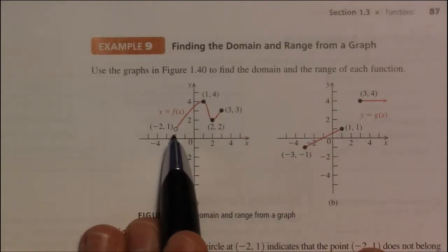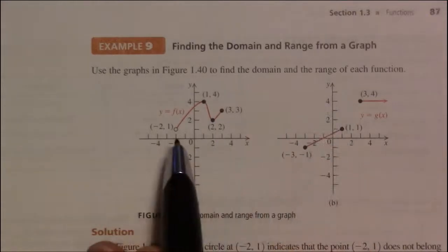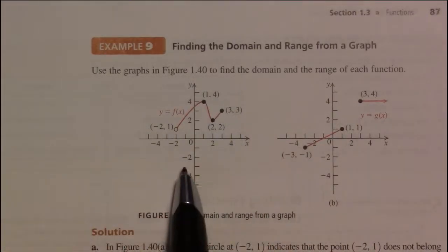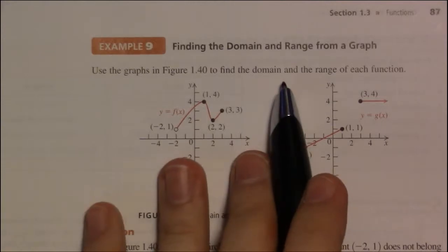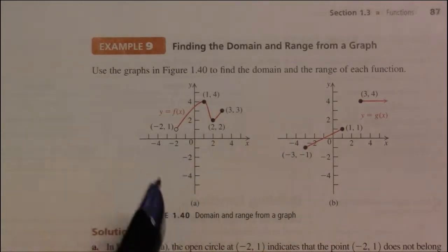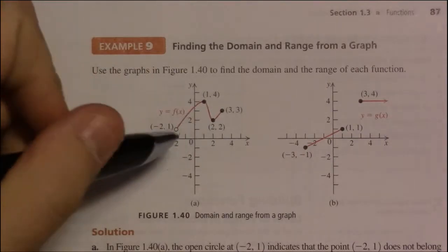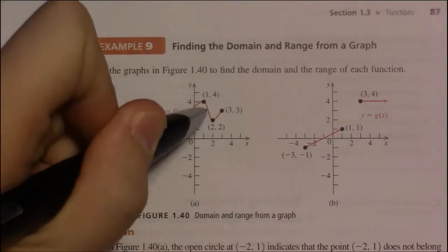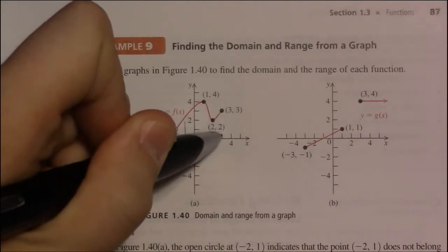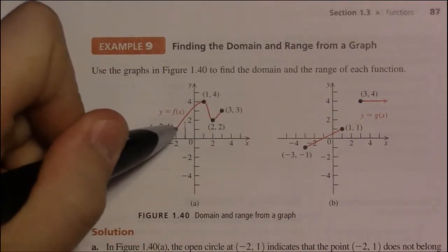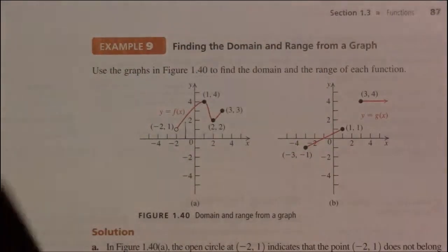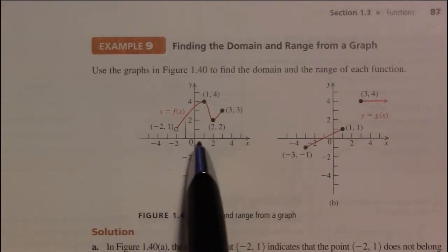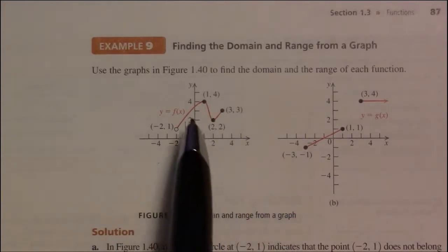The way you find domain and range of a function which is given to you in its graphical form is as follows. Starting with domain, all you do is you just imagine dragging or smashing each part of the graph onto the x-axis. So we're going to crush the graph onto the x-axis and see which part of the x-axis is covered by this crushed graph.